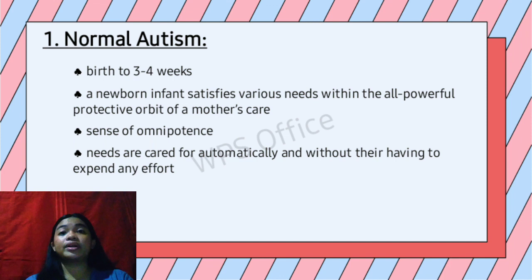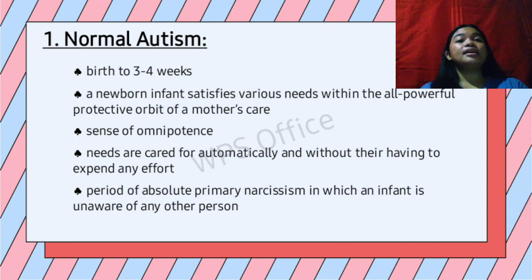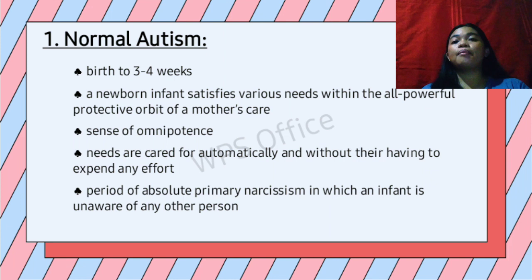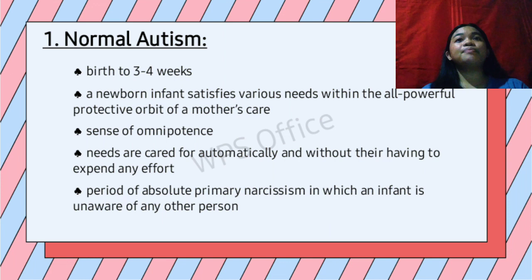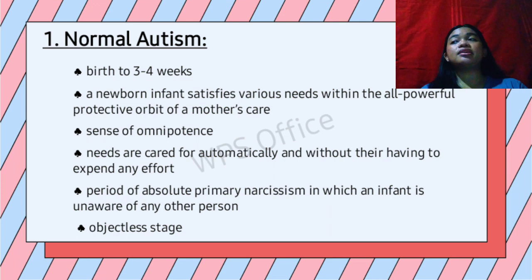Mahler described this period as primary narcissism, in which the infant is unaware of any person. Unlike Klein, who viewed newborns as terrified, Mahler observed neonates as having relatively extended periods of sleeping and absence of stress. She thus considered this stage as extreme primary narcissism, where the child has no awareness of anything. She also described the normal autism stage as an objectless period, in which the newborn seeks the mother's breast naturally.